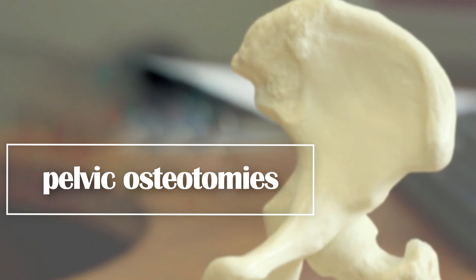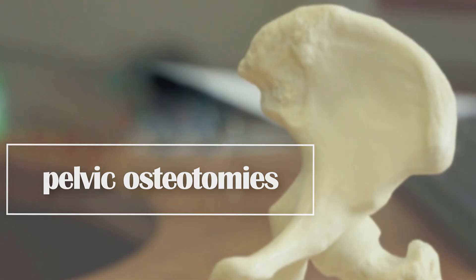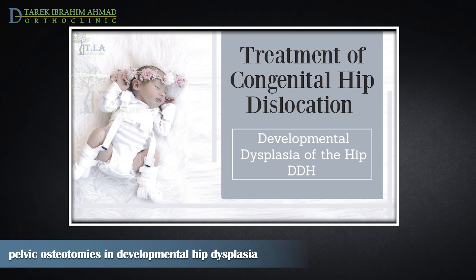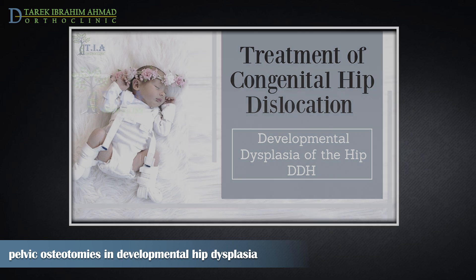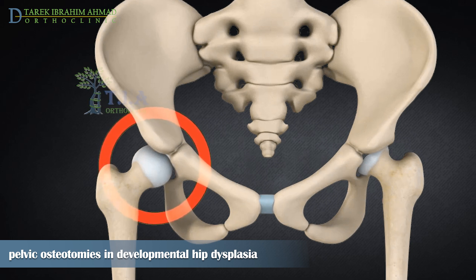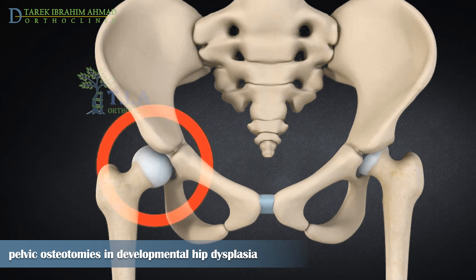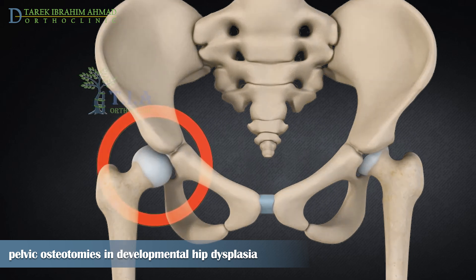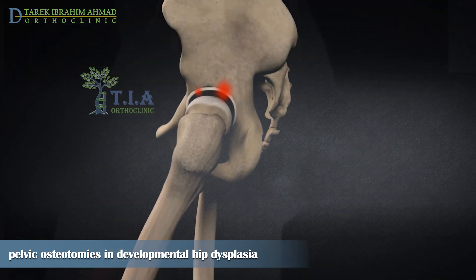Pelvic osteotomies for developmental hip dysplasia. I have discussed the treatment options according to age groups previously in a video titled 'Congenital Hip Dislocation Treatment.' The treatment goal is to achieve a stable, congruent, and concentric hip joint as early as possible, which in turn will preclude or postpone the development of degenerative osteoarthritis of the hip.